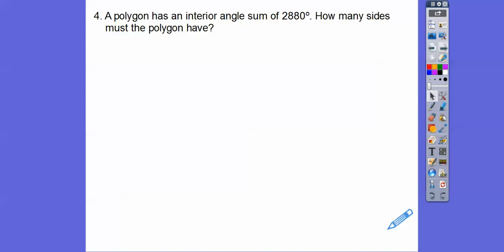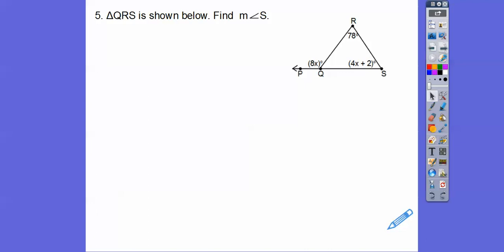A polygon has an interior angle sum of 2,880 degrees. How many sides does it have? So n minus 2 times 180 equals 2880. Divide both sides by 180, we get n minus 2 equals 16. So there's 18 sides when we add 2 to both sides.